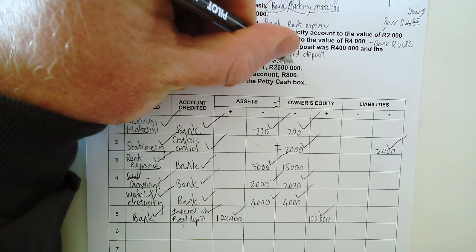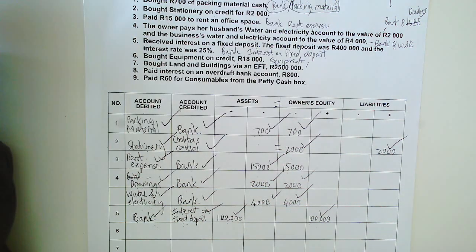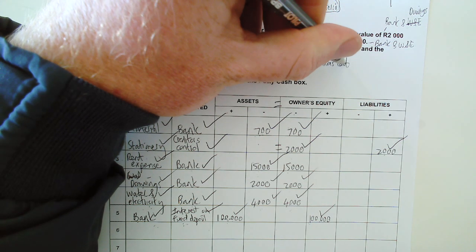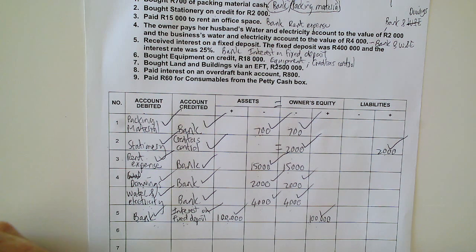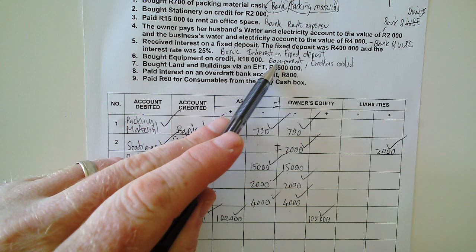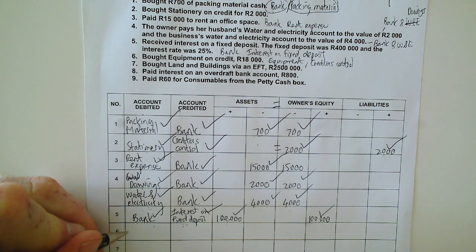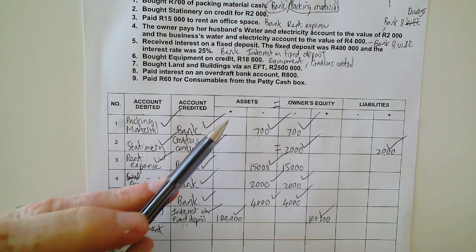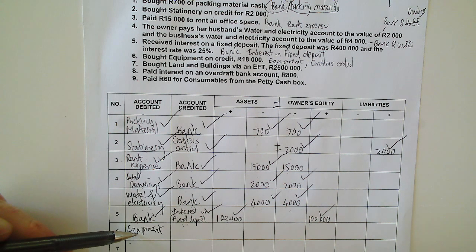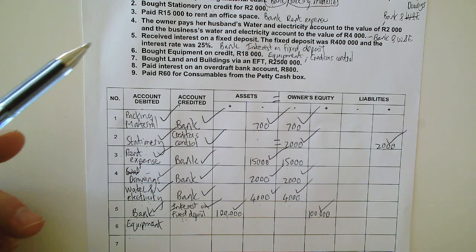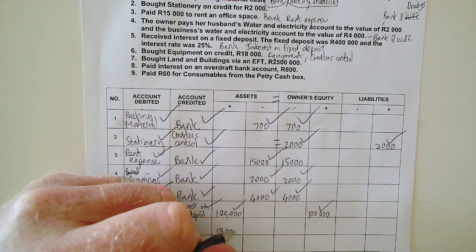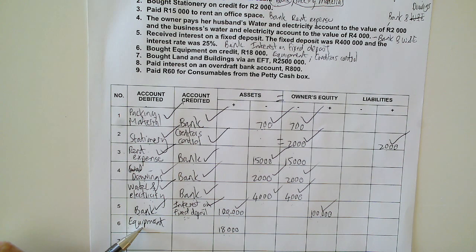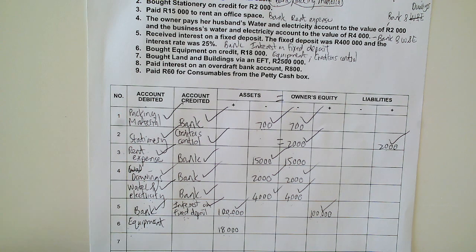What did I buy? Equipment — so that's my one account. I bought it on credit, which means I didn't pay for it, so I can't write bank here. It's going to be creditors control because I'm owing the supplier the money. Anything that you purchase, whether cash or on credit, I will debit that account. Equipment is an asset account and I've got more equipment, which is why I put equipment on the debit side. The value of the transaction is 18,000, so assets — equipment — increased by 18,000.